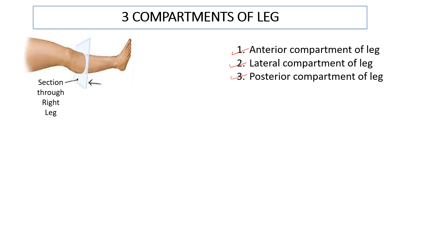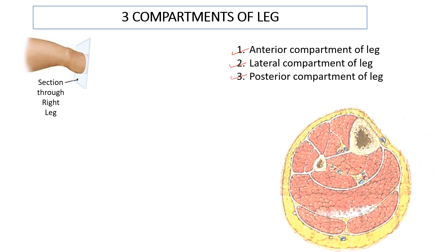Let's take a cross-section through the right leg and look at it. The distal part of the leg is removed and the section will look like this. Imagine yourself standing at the foot of the cadaver and looking at this section of the leg. This will be the medial side and here will be the lateral side. Remember, this is a right leg. This is the tibia — the larger bone — and the fibula, which is the smaller of the two. You can also see the different muscles present in the leg along with the neurovascular structures.